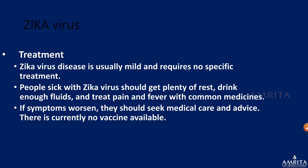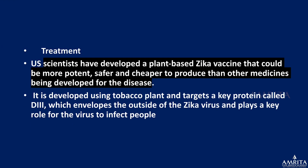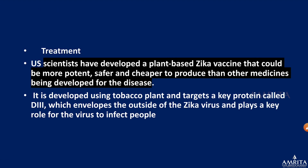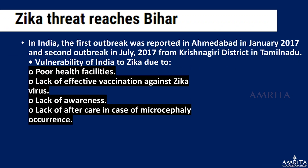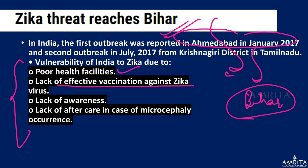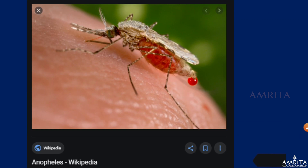There is no specific treatment for Zika. A plant-based Zika vaccine is being developed by US scientists but is still in the research phase. In India, Zika cases have been reported first in Ahmedabad and now in Bihar. India's vulnerability lies in poor health infrastructure, lack of effective vaccination and awareness, and inadequate aftercare for children diagnosed with microcephaly.